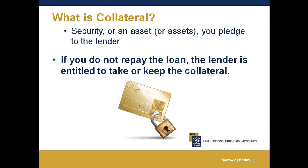Collateral is often used to secure a loan. Lenders take a risk to lend you money, so they want to make sure their money is secure. An asset or assets you pledge to the lender is the definition of collateral. A guarantee is a form of collateral — for example, co-signing a loan. If a person with no credit history asks another person to co-sign, the co-signer is equally responsible and must pay if the borrower defaults. It's generally never a good idea to co-sign for a loan.